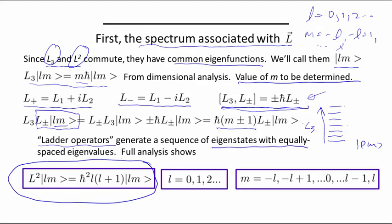The full analysis requires that this sequence terminate at some point, because if L squared has a fixed value, that means there's a maximum value of the maximum eigenvalue for any one of its components. That analysis yields the following result. The spectrum of the angular momentum operator, L squared, the eigenvalues of the form L times L plus 1, where L is any non-negative integer, so 0, 2, 6, etc.